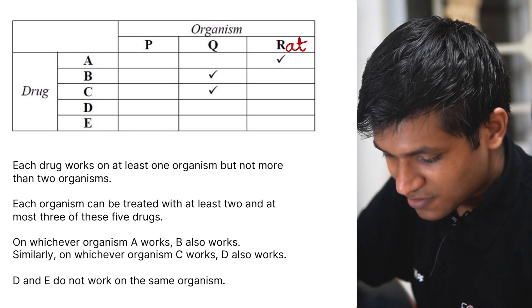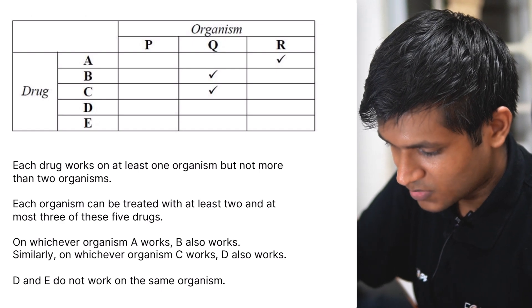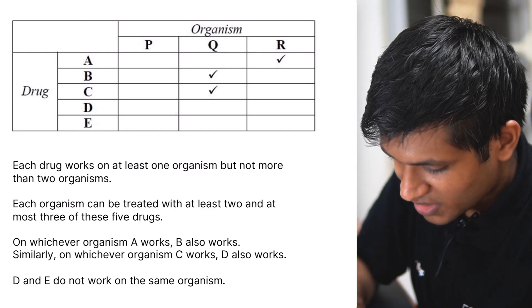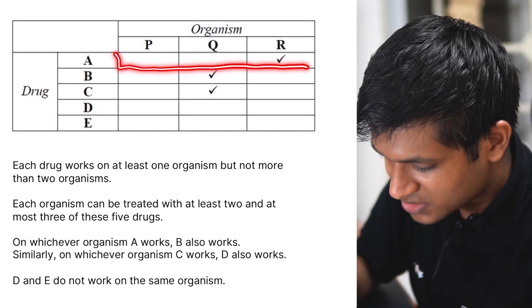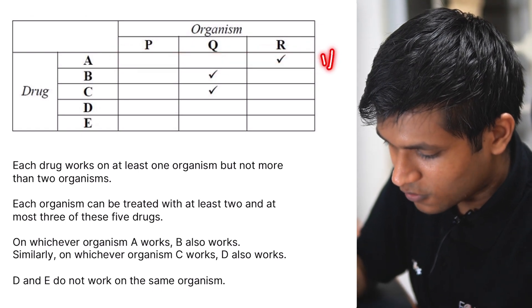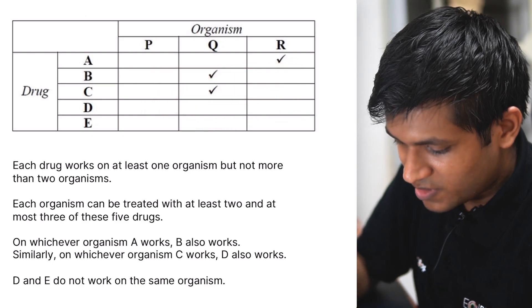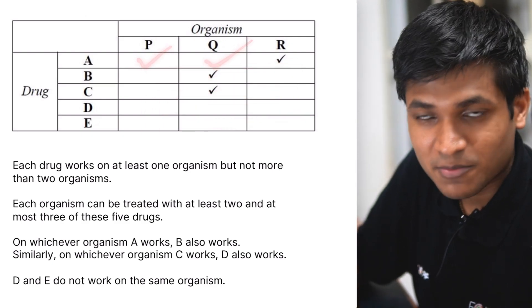Each drug works on at least one organism but not more than two organisms. So if I look at the number of tick marks in this particular row, it can be 1 or 2. And this is applicable for all the rows. I cannot have a row where all three have tick marks.